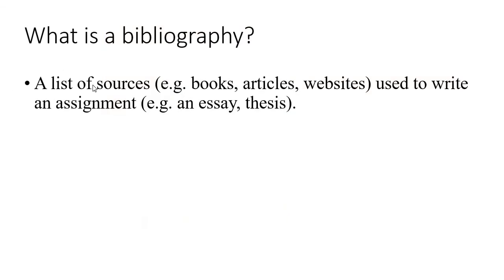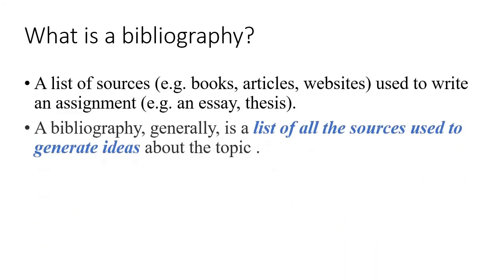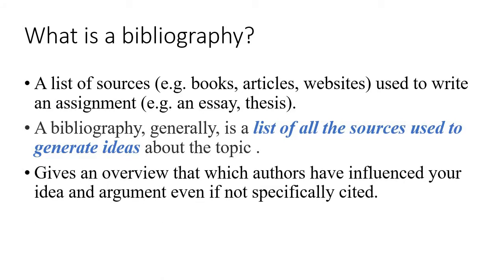Bibliography is a list of sources — it can be books, articles, or websites — used to write an assignment, thesis, or essay. If you have a piece of writing, you can use different sources to generate your ideas. Bibliography is generally a list of all the sources used to generate ideas about the topic. It provides only an overview of which authors have influenced you in order to generate your ideas and arguments.